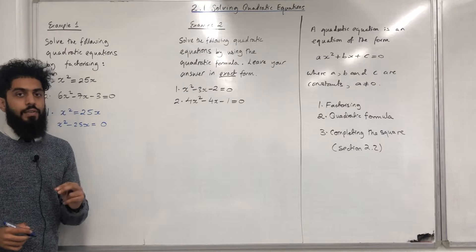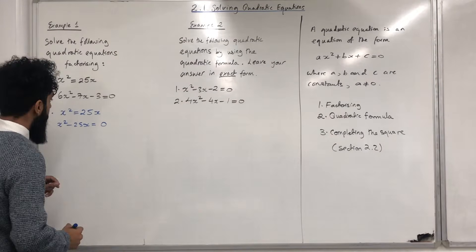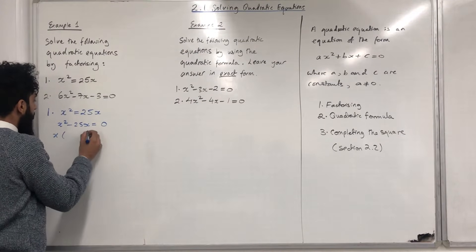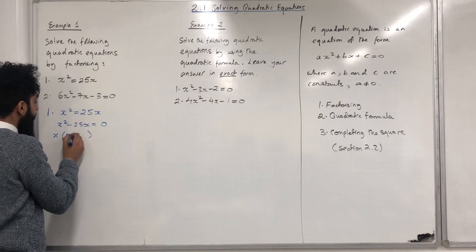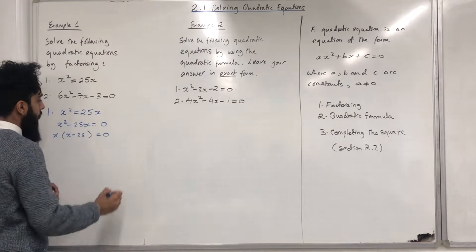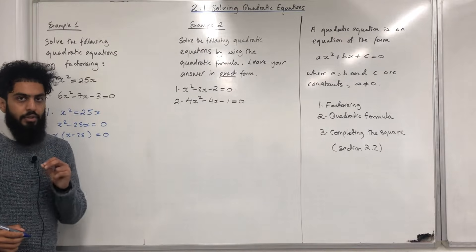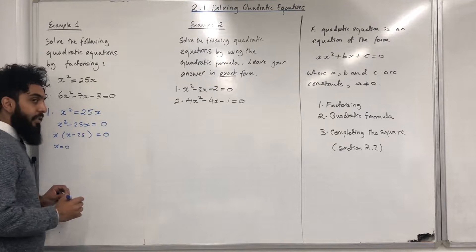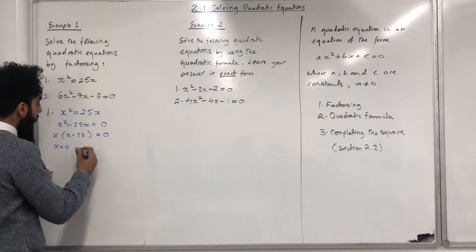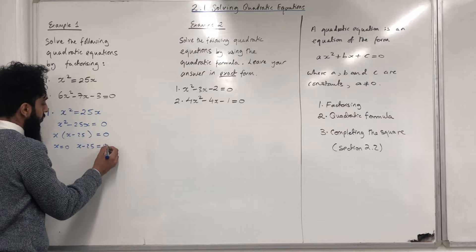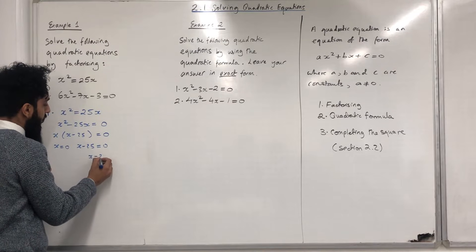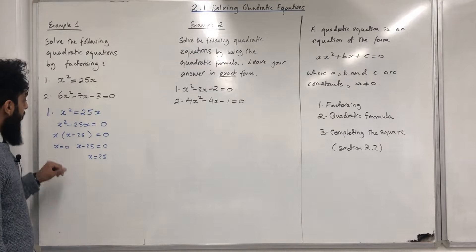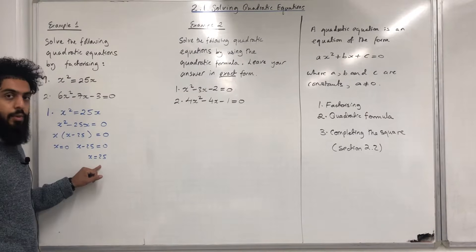The next step is to factorise the left-hand side. We can take out the highest common factor between these two terms, which is X. In brackets we have X - 25 = 0. So there are two solutions. The first solution is X = 0. The second solution comes from X - 25 = 0, giving us X = 25. The two solutions are X = 0 and X = 25.